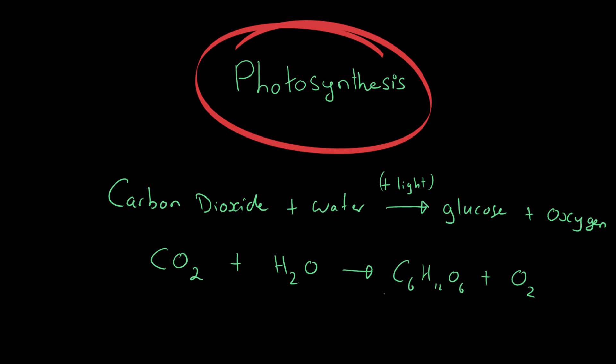Glucose is C6H12O6, and oxygen is O2. To balance it: we've got six carbons in glucose, so we need six CO2. We've got twelve hydrogens, and two hydrogens in water, so we need six lots of water making twelve. Six times two makes twelve, plus six makes eighteen oxygens on the left, and here we've got six in glucose, so we have twelve left and we need six O2. That is now balanced.